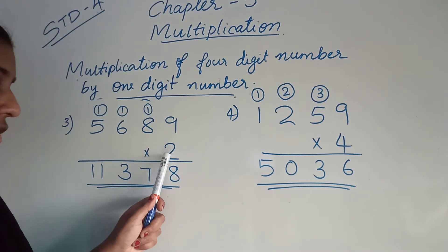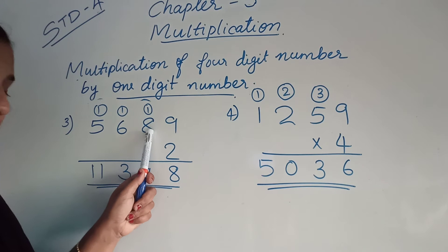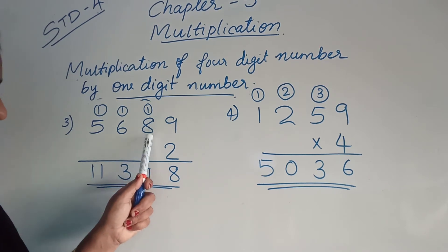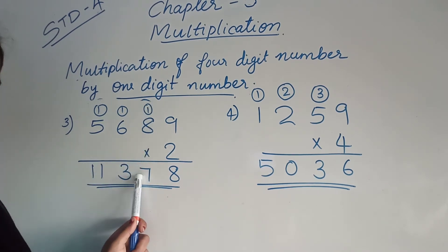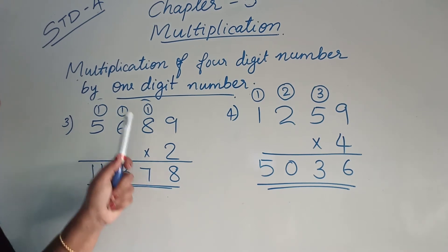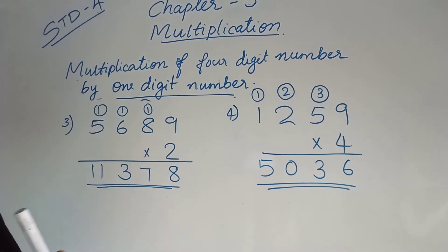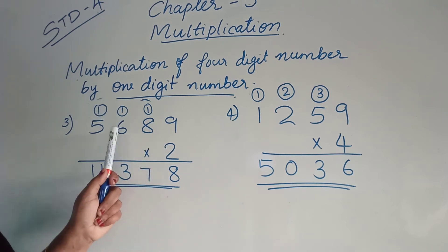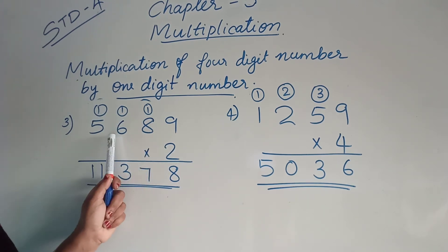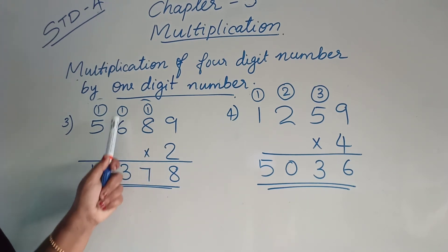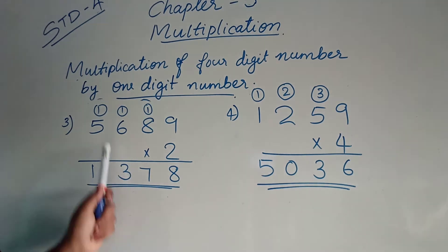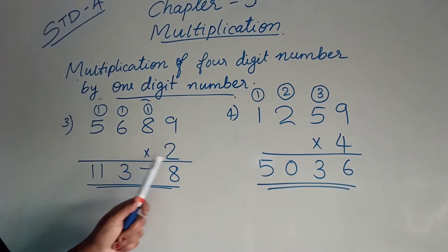Then, next is 2 into 8. 2 eights are 16. 16 plus 1 is 17. You can write 7 here and 1 carry over to the next place. Now, 2 sixes are 12. 12 plus 1 is 13. You can write 3 here and 1 carry over to the next place.